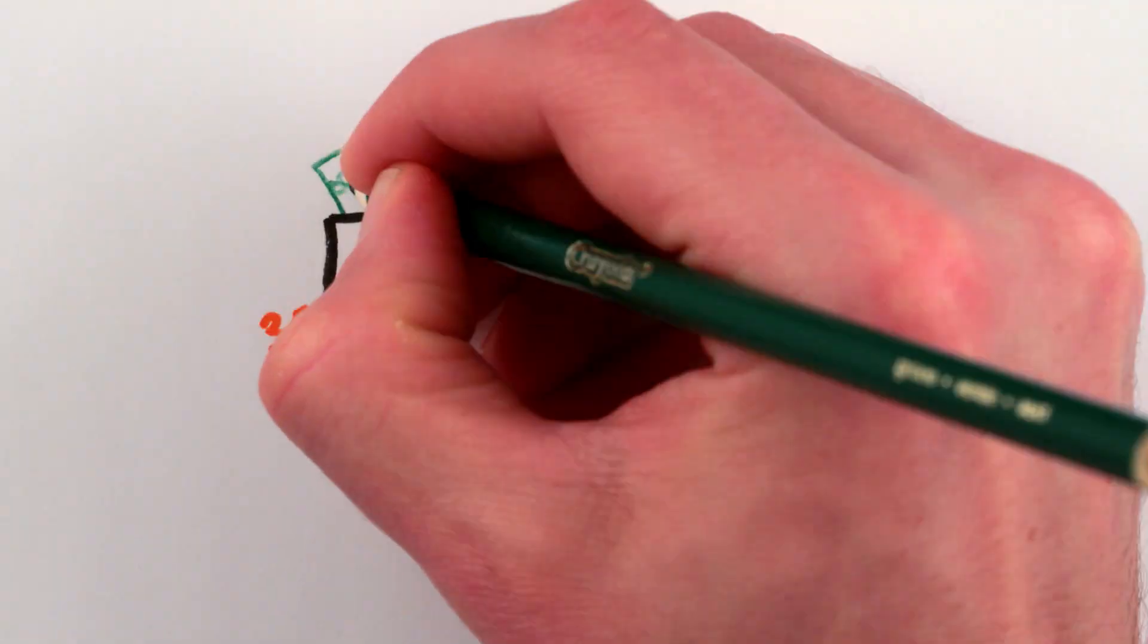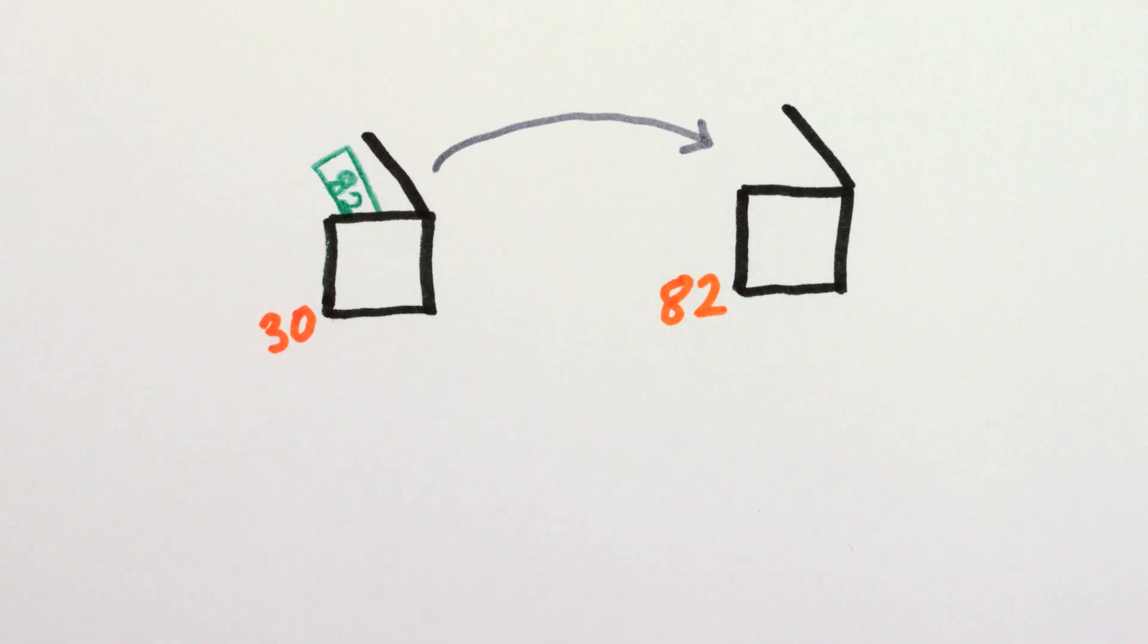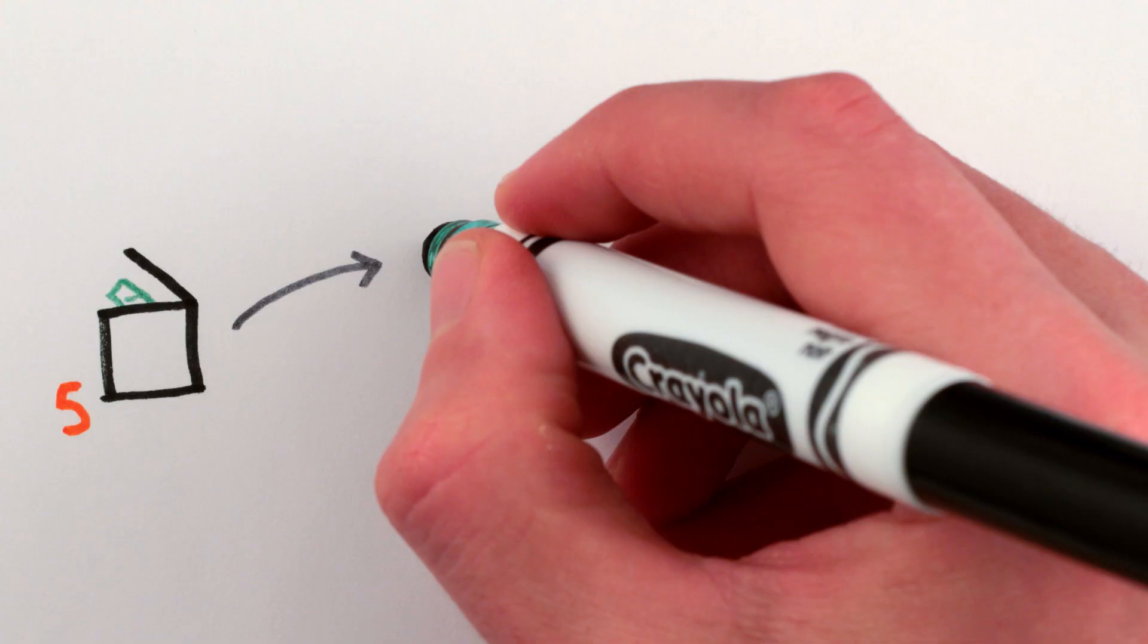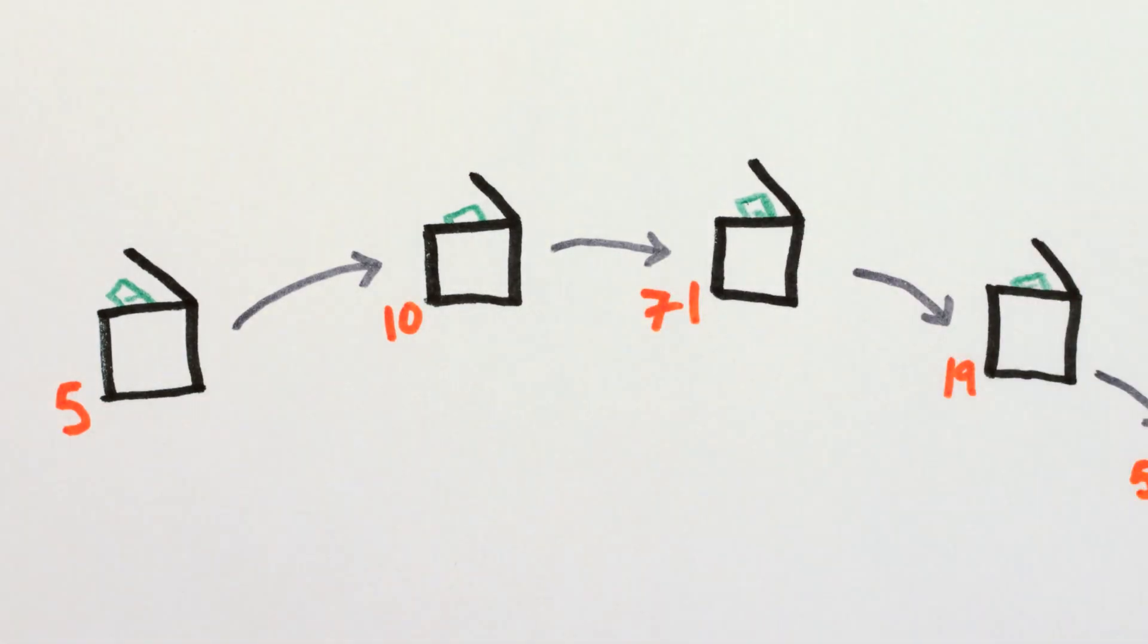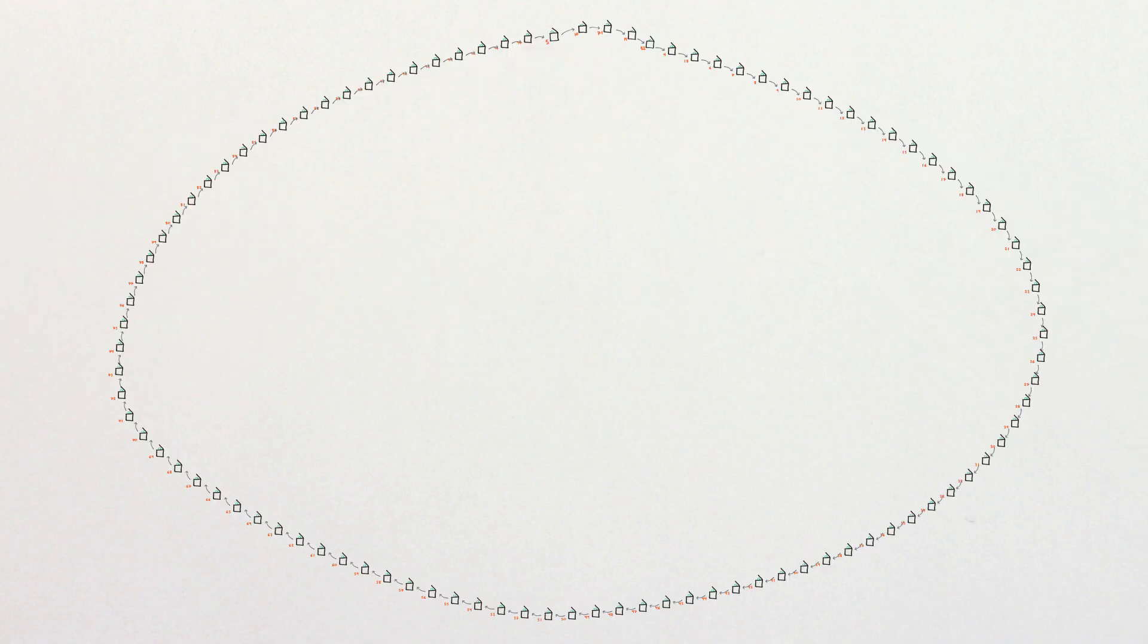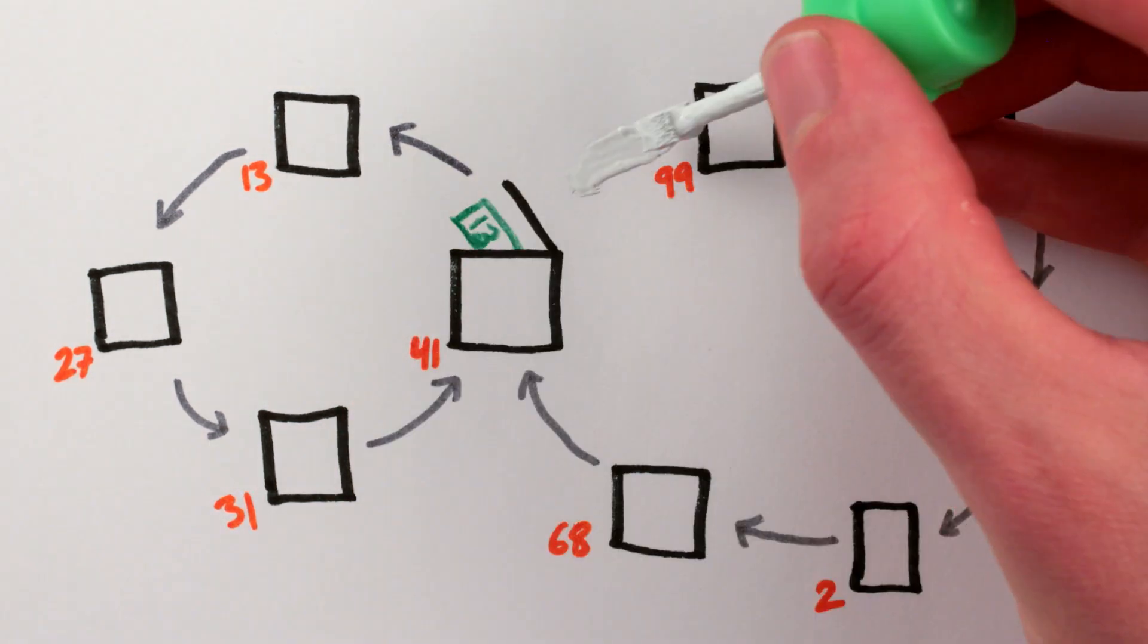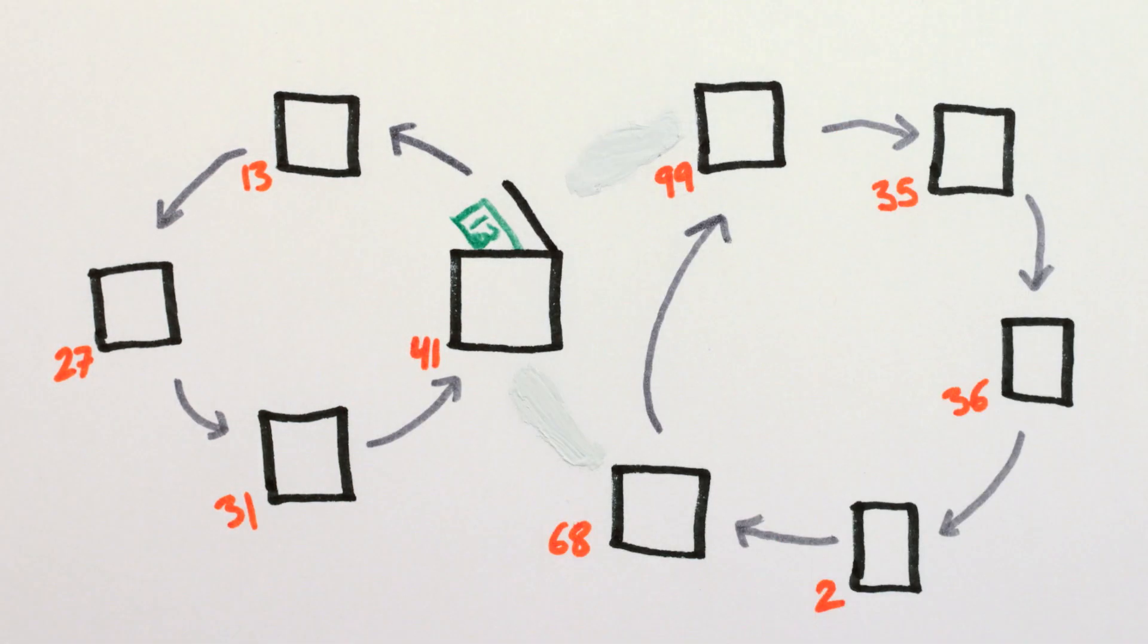Short chains are ones like box 30 says go to box 82, box 82 says go to box 5, 5 says go to 30. That's a chain of length 3. Long chains link up more boxes before circling back, and the longest possible chain links up all 100 boxes. No box can be in two different chains, because each box only tells you one new box to go to. But each chain always circles back, since there are finite boxes.